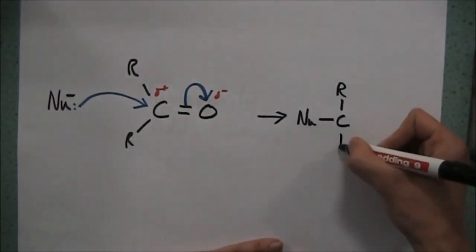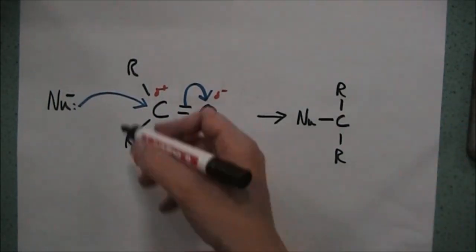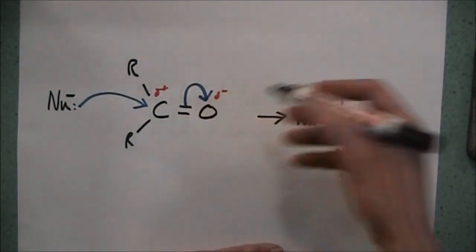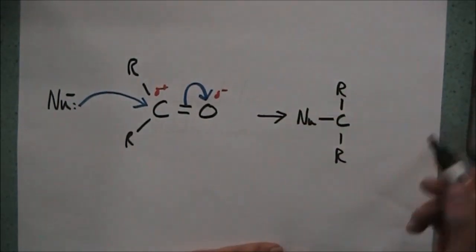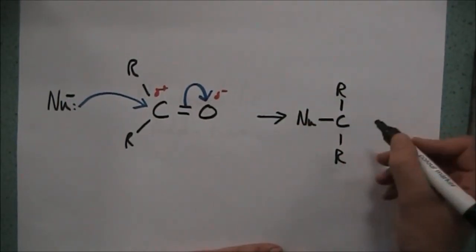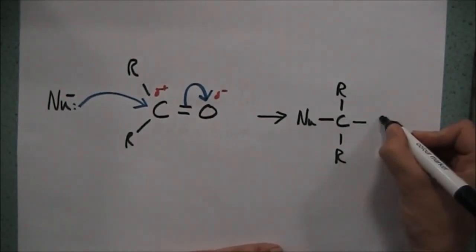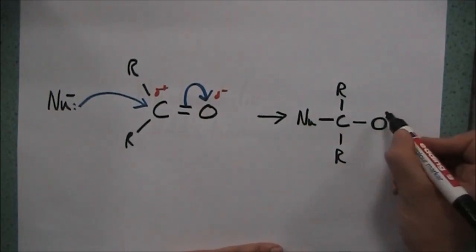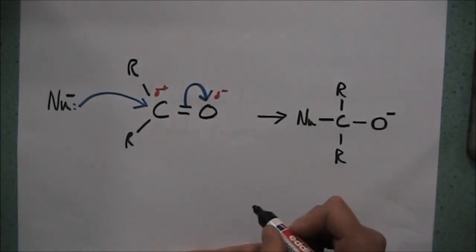We're going to have our organic groups above and below from where they were before, one of these could be a hydrogen if it was an aldehyde, it doesn't matter, it doesn't affect the mechanism. And then we have this single bonded oxygen now, and because it's gained the electrons from this bond, that is where our negative charge is going to be.